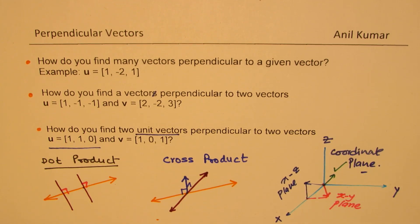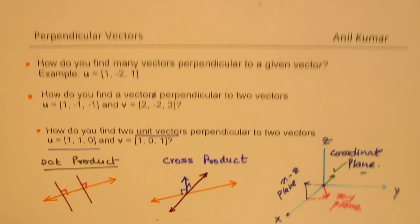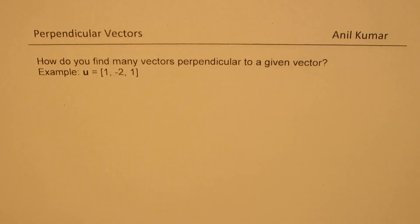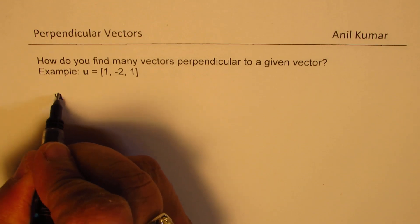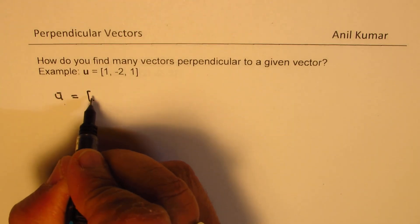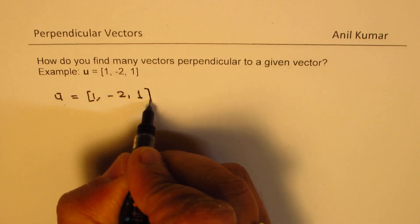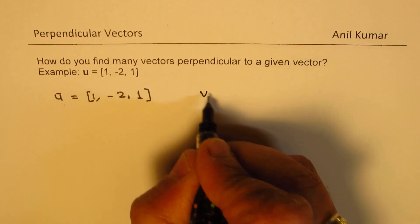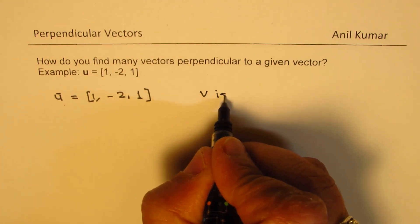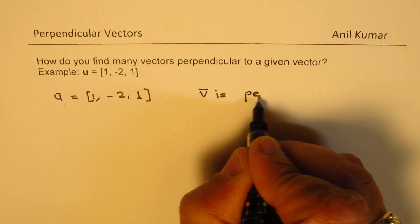So there are three different ways in which we will see how to work on questions related to perpendicular vectors. Let us begin with the very first question, which is to find many vectors perpendicular to a given vector. We have a vector u which is equal to (1, -2, 1), and let us say v is perpendicular to u.